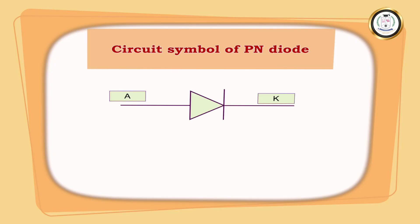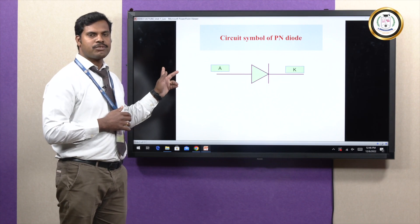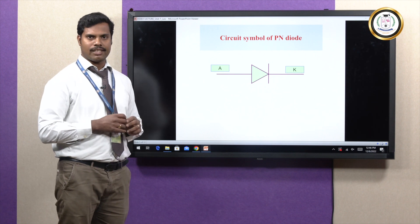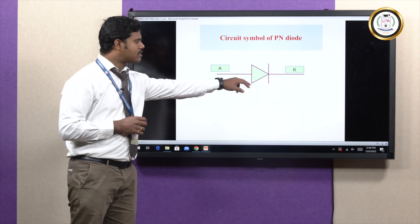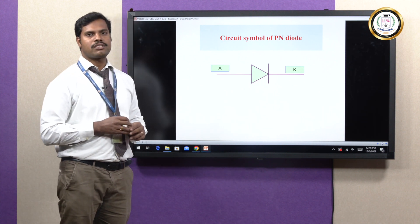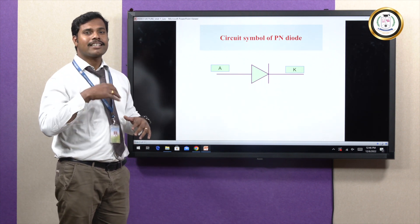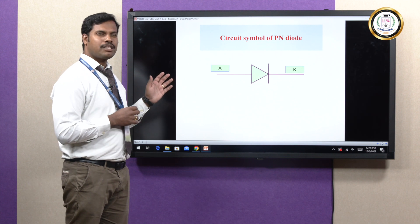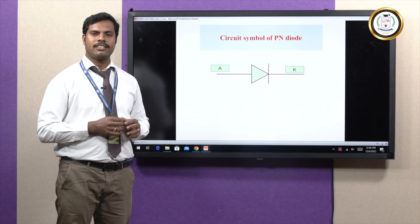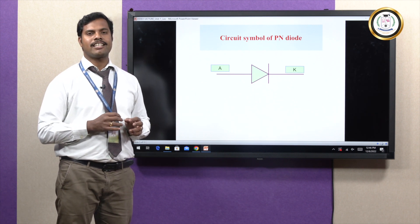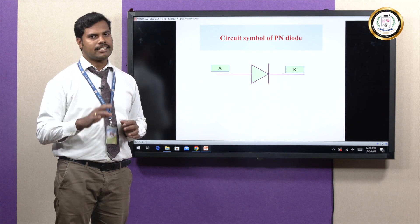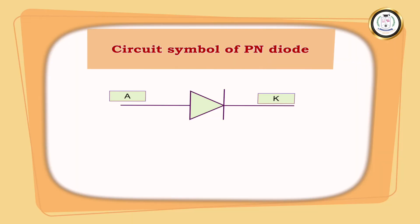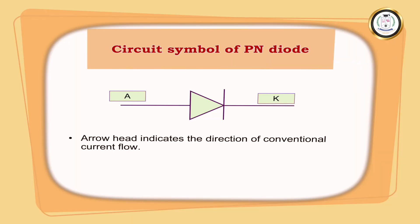This is the circuit symbol of the diode. It has two terminals: anode and cathode. The arrow mark indicates the current conduction direction. Since the P-N junction diode is a unidirectional device, it can conduct only from anode to cathode; from cathode to anode it remains in the off position.